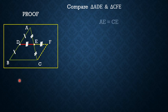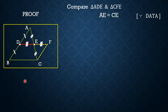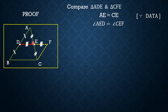First point: AE is equal to CE — observe the figure, AE and CE are equal because of data. Second point: angle AED equals angle CEF — these are the two straight lines intersecting each other at point E, therefore vertically opposite angles are equal. Third point: DE equals EF — because of construction.